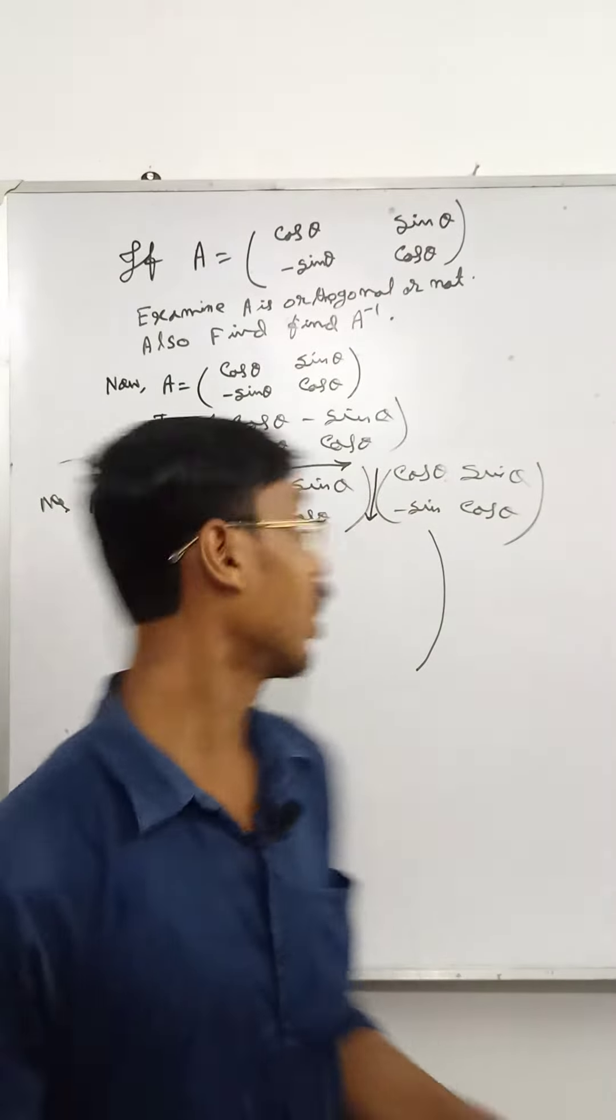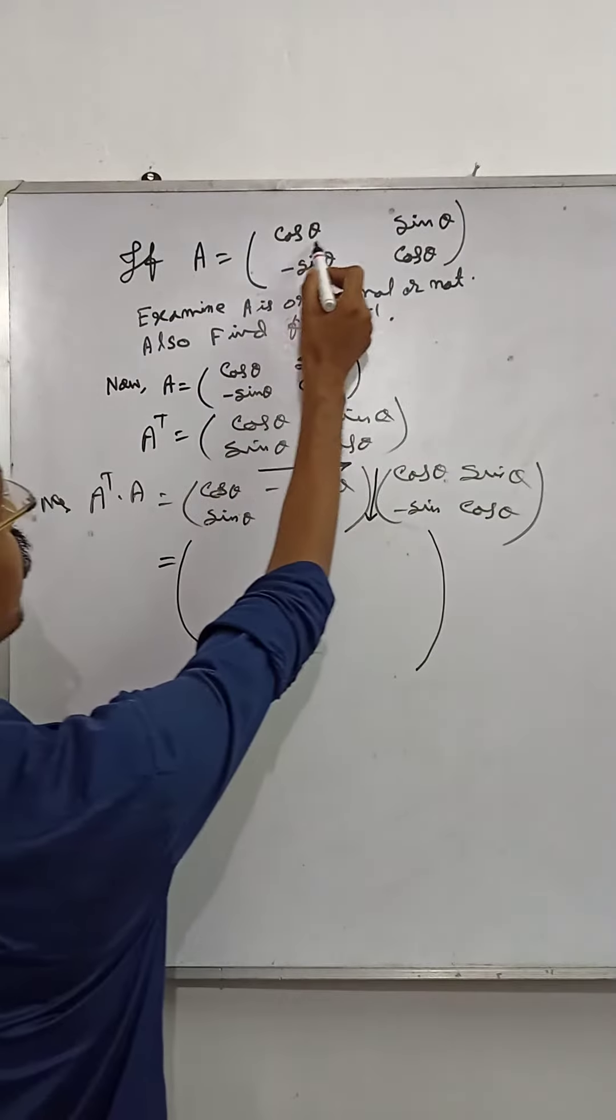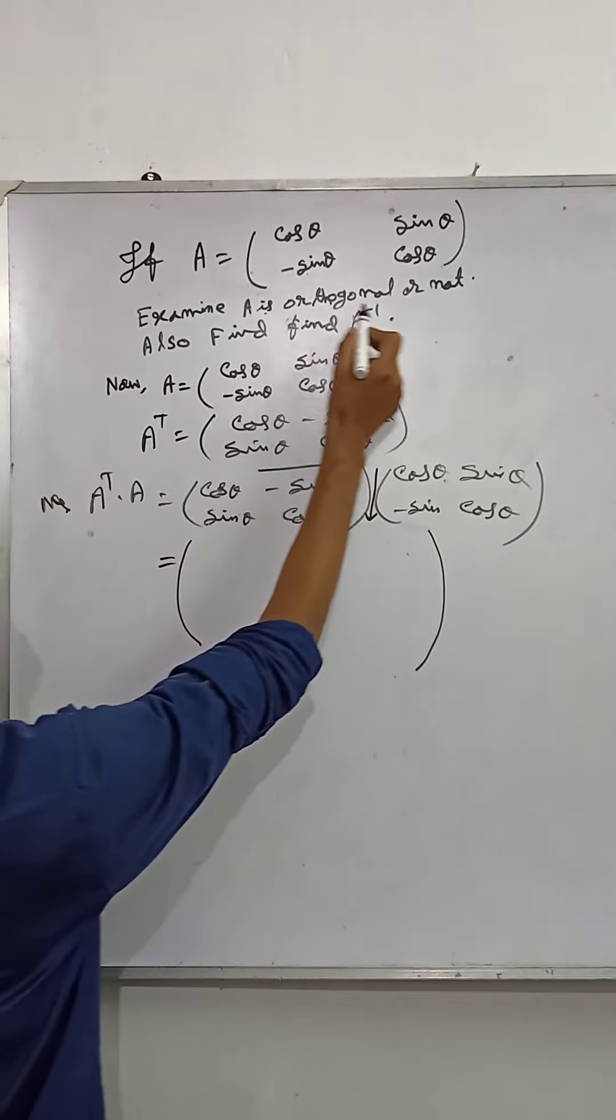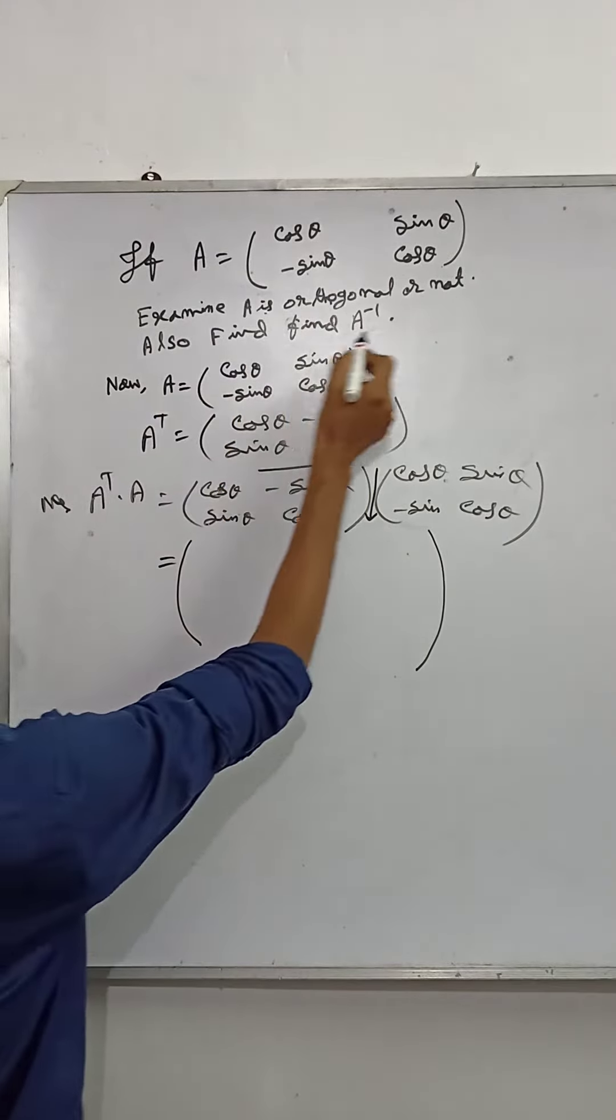Welcome back to my channel Redustration. Today's topic: If A equals the matrix (cos θ, sin θ; -sin θ, cos θ), examine if A is orthogonal or not, and also find A transpose.